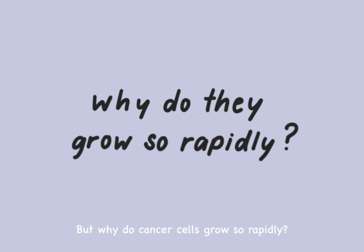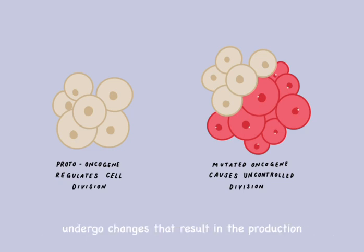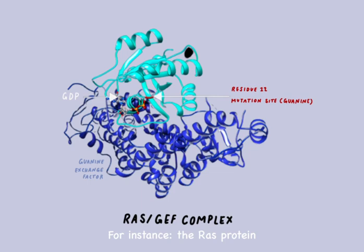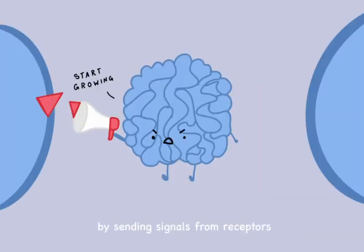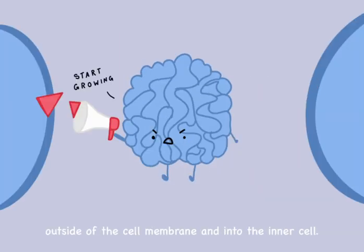But why do cancer cells grow so rapidly? This is caused by oncogenes. Proto-oncogenes become oncogenes when a cell's properties undergo changes that result in the production of abnormally functioning proteins. For instance, the Ras protein, a key regulator protein which controls growth by sending signals from receptors outside of the cell membrane and into the inner cell.